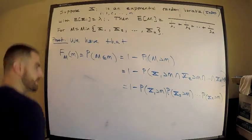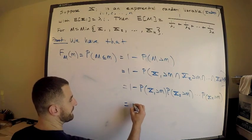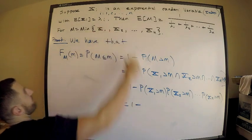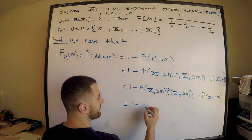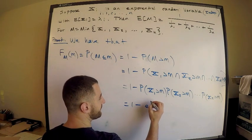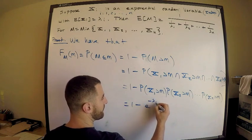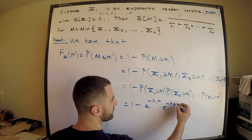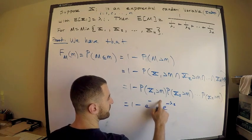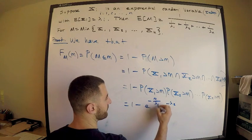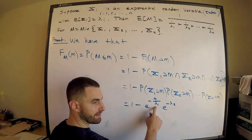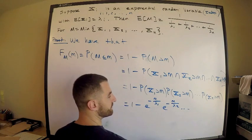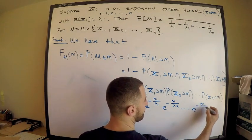This is equal to 1 minus... the survival function of X_1, which has expectation lambda_1, so this is e to the negative m over lambda_1, times e to the negative m over lambda_2, all the way up to e to the negative m divided by lambda_n.